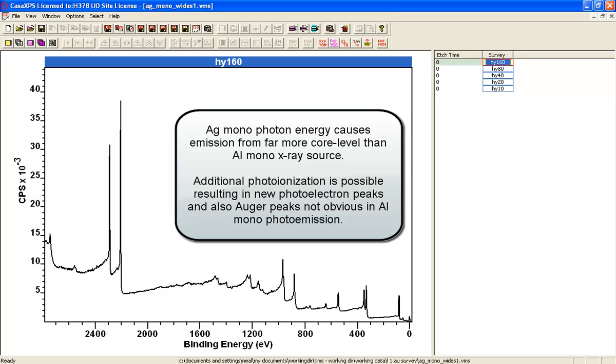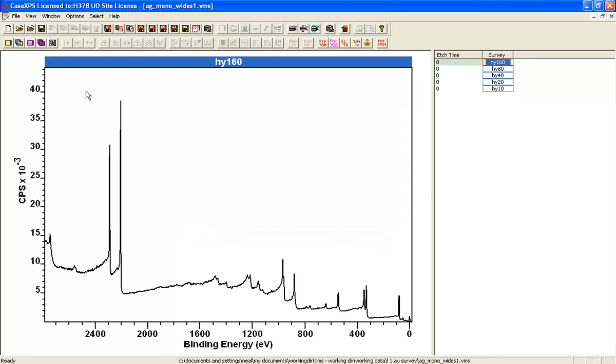This is an example of data measured from a silver monochromator. There are many peaks in this spectrum, many more than you'd see from aluminum.